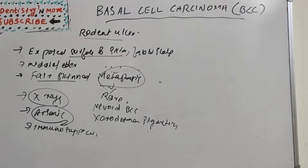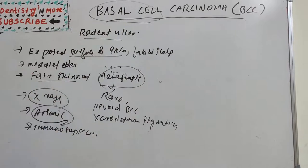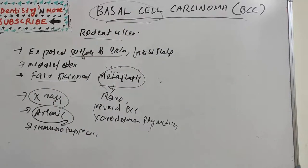BCC is thought to arise from pluripotent stem cells of the basal cell layer, which is why it is named basal cell carcinoma. It arises from the basal cell layer of the epidermis as well as from follicular structures such as hair follicle stem cells.